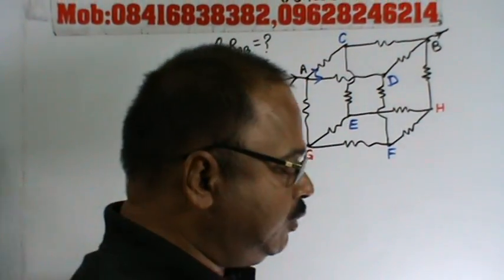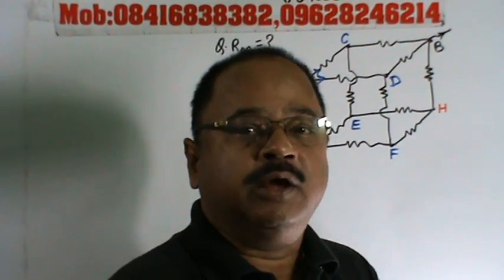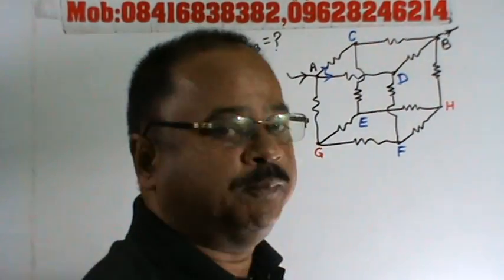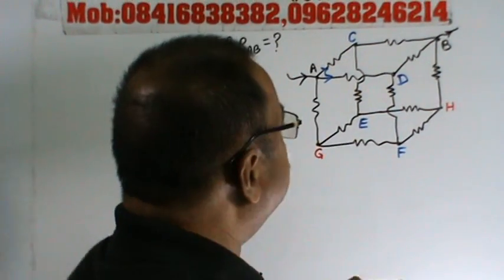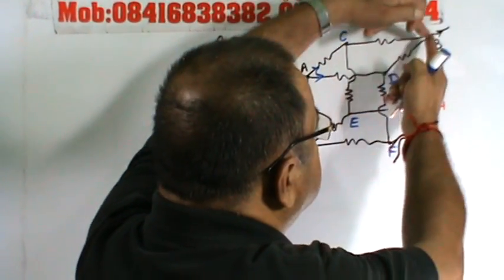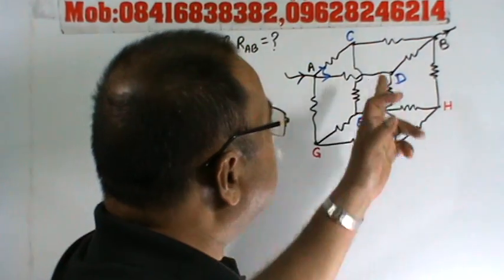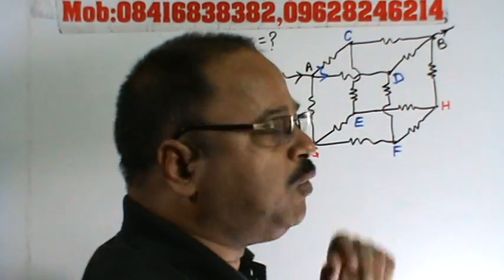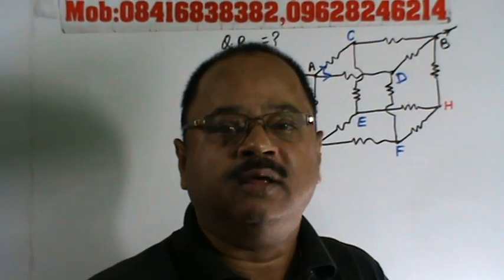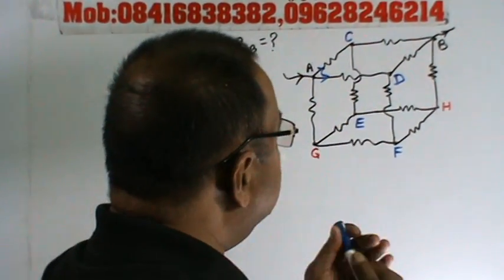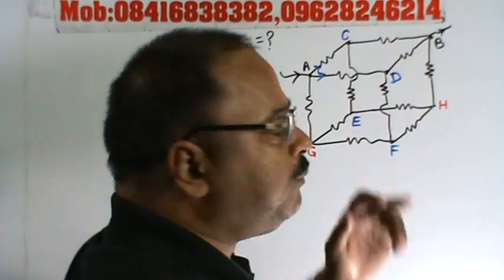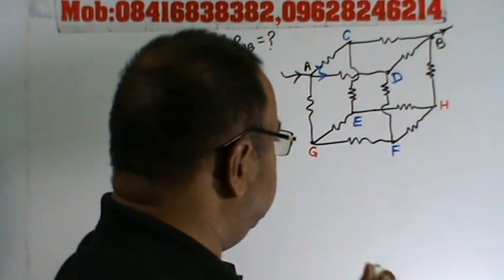So what will you do here? You will short circuit the points at the same potential. If the two branches are symmetrically located, then the corresponding points C and D will be at the same potential.